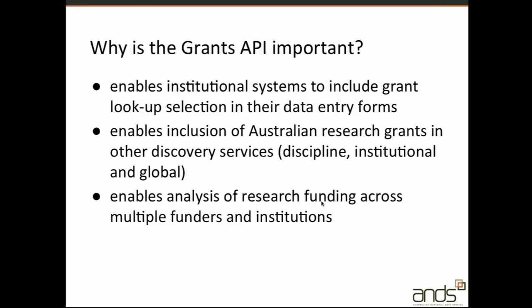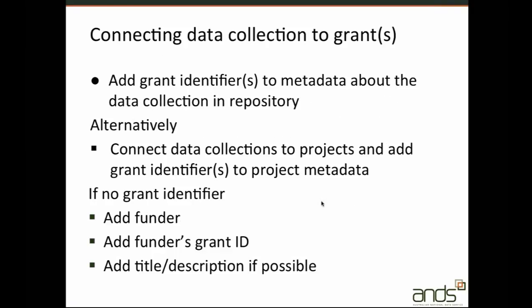Analysis and reporting systems that want to analyze research funding patterns can also use this API. There are two options for connecting data collections to research grants. If your institution supplies project descriptions to RDA with connections to research data outputs, and the project description contains the associated grant identifier, then the connection will be made. The other simpler option, if you don't supply project descriptions, is just to add the grant identifier to the metadata about the data collection, as one does for a publication. Of course if the funder has not supplied grant information to RDA there will be no PIRL grant identifier; however it would still be beneficial to select the funder from a dropdown list and add the grant ID as free text.